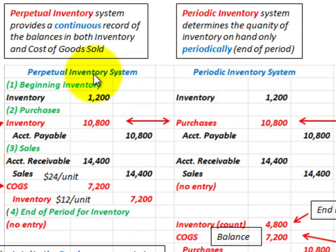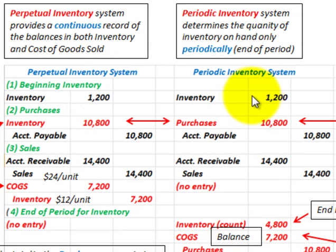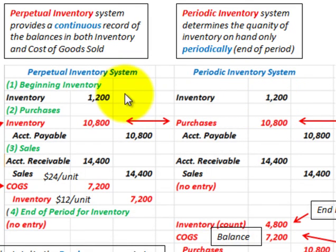Looking at our side-by-side comparison, starting with beginning inventory — both systems have an inventory account. In this case, beginning inventory would have been debited for $1,200 under the perpetual system, and the same for the periodic inventory system: an inventory account with beginning inventory debited for $1,200.